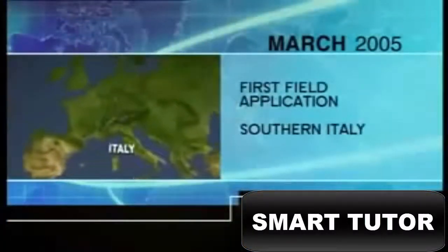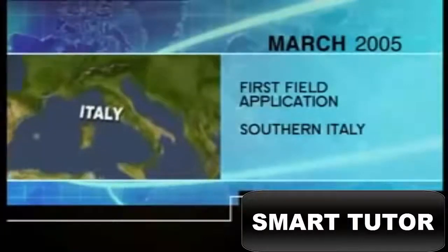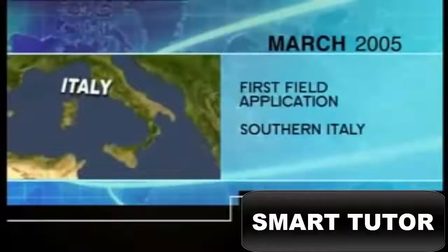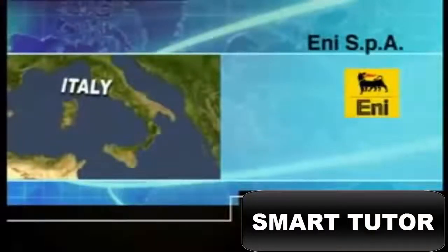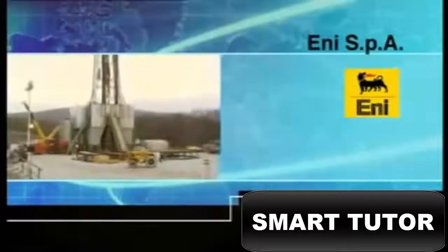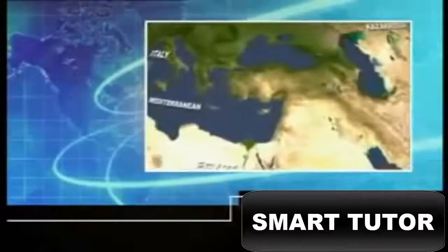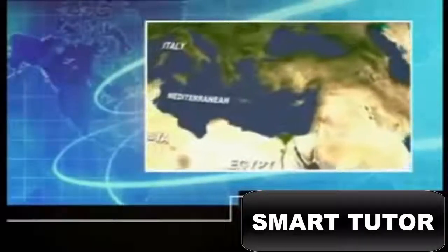The first field application of the system took place on a rig in southern Italy. It was deployed by the Italian oil company ENI SPA. ENI will use the CCS in oil fields that it is developing in the Caspian, North Africa, and have already completed one project in the Mediterranean, where serious drilling problems have prevented them reaching the target reservoir formation.